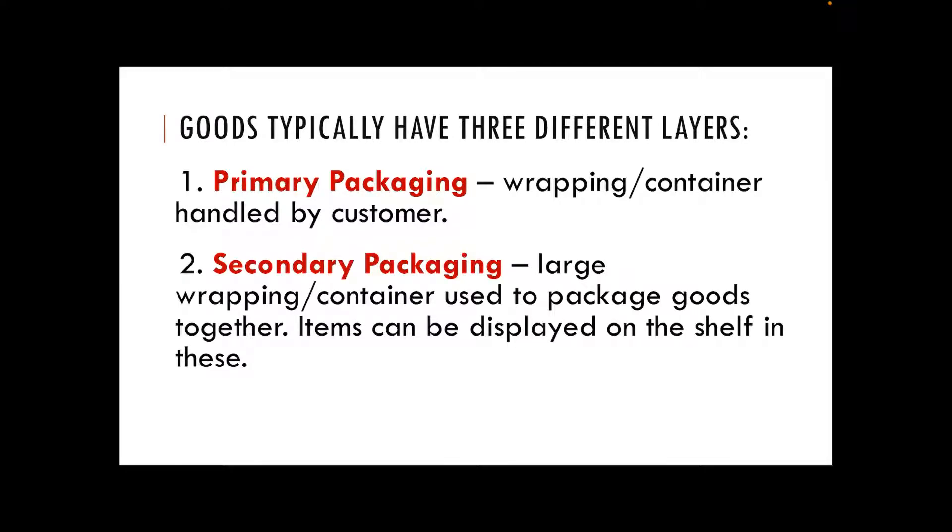The secondary packaging then is the larger wrapping or container used to package those goods together. Items are usually displayed on the shelf, so that could be the cardboard box that 20, 30, 40 of those chocolate bars are packaged together in. And then lastly, the transit packaging is the big pallets or trays where we can bundle lots of our secondary packages together and then pop them onto transport to get them to the shops easier.